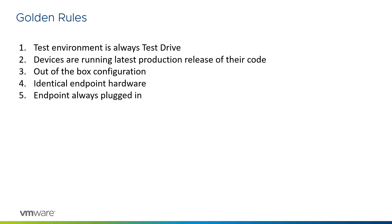We also used out-of-the-box configuration. If the protocol worked really well, great. If it didn't, and there were ways to improve it by making tweaks or changing files, that wasn't something we wanted to do — we wanted to see what it was like out-of-the-box. The endpoint hardware was always the same — two identical laptops — and the endpoints were always plugged in. With laptops not plugged in, you can find the CPU gets clocked down to save battery, so we wanted to make sure performance wasn't affected.